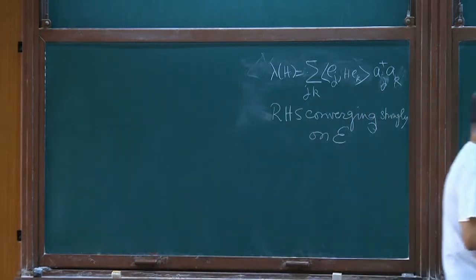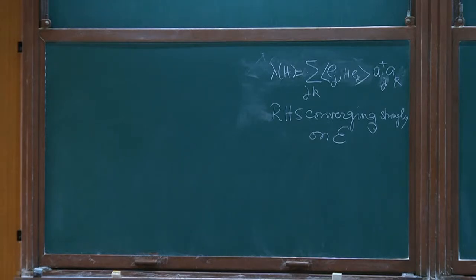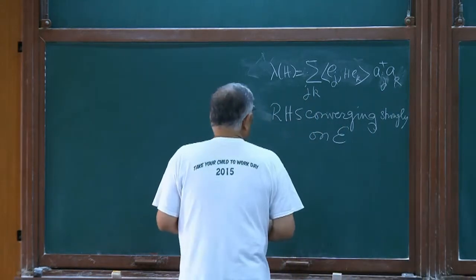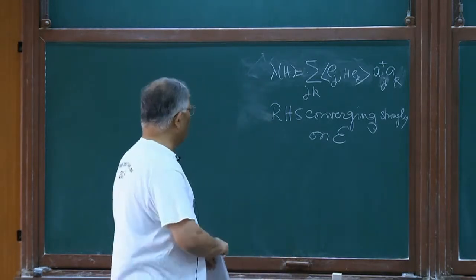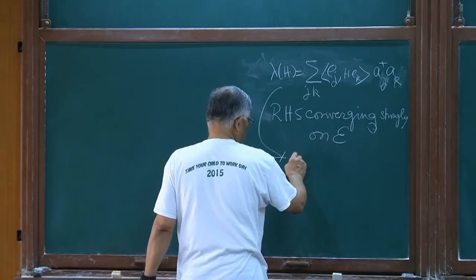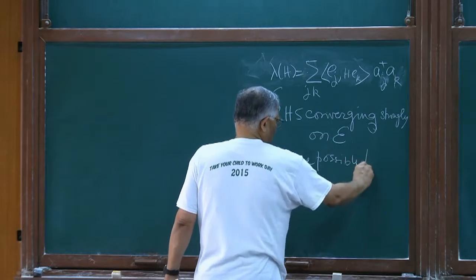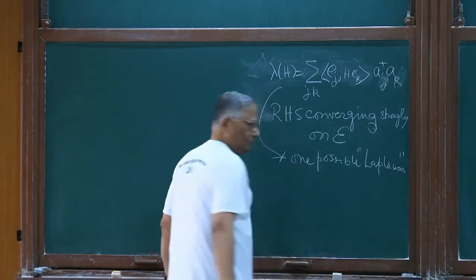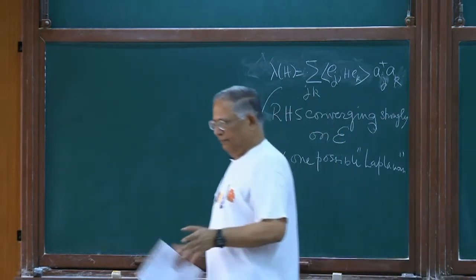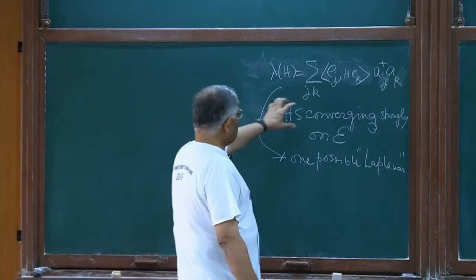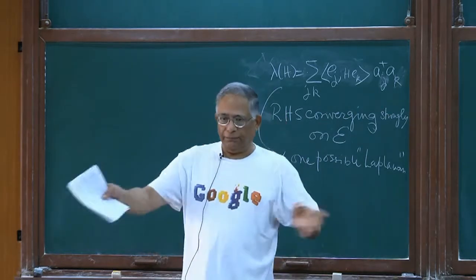This operator has a name. Various authors have given various names. Parthasarathy gives the name 'conservation' — that is one name some people use. 'Number' is a better name in my view, but anyway it's not so important. We will see later in what sense this object is a Laplacian in infinite dimensions, because that is one of our goals. There are infinite number of directions because the base space is infinite dimensional, and this has to do with all the possible coordinate directions.